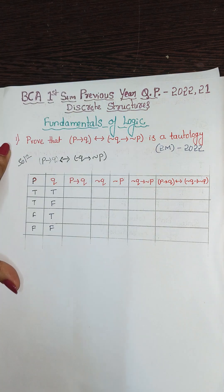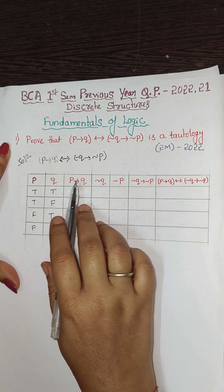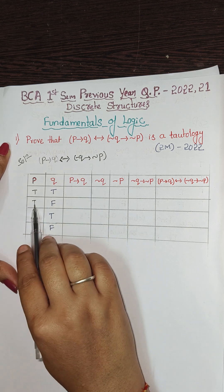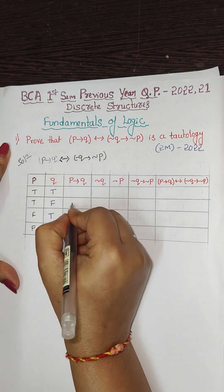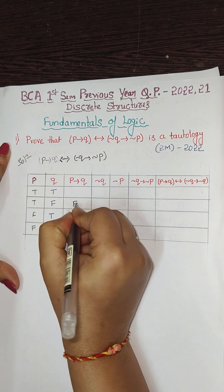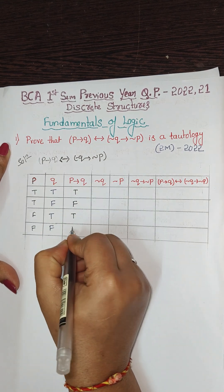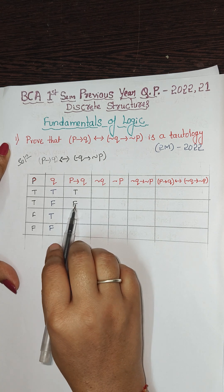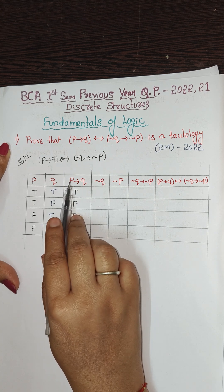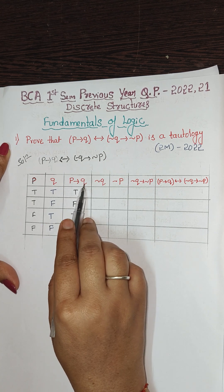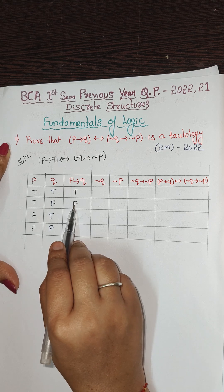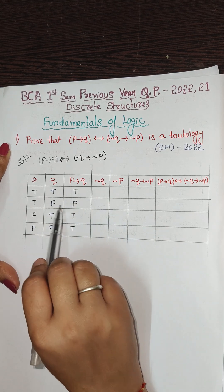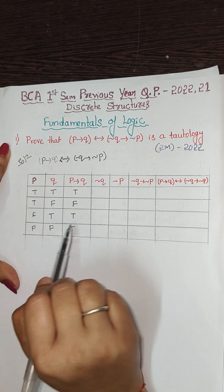A conditional statement is false only when the first proposition is true and the second is false. First true and second false — then only it is false; otherwise all others are true. So for p→q: T→T is true, T→F is false, F→T is true, F→F is true.